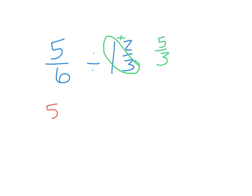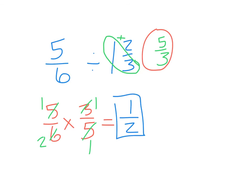So now I just rewrite 5 sixths times the reciprocal of this. So this is going to be 3 fifths. Ha ha, it worked out again. And again, I can simplify across. We have 5 divided by 5 is 1. 3 divided by 3 is 1. 6 divided by 3 is 2. So then we have 1 times 1, which is 1. 2 times 1, which is 2. So there is your simplified fraction.